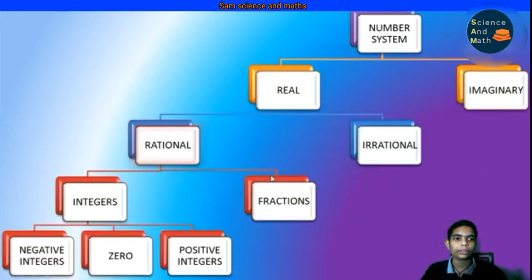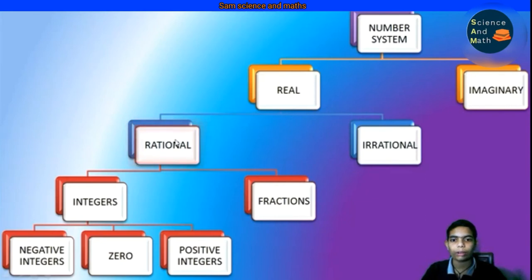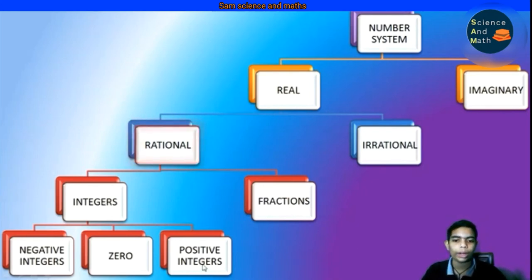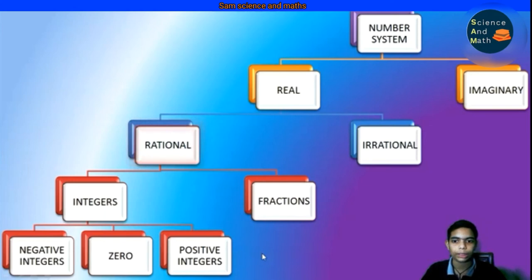Here you can see the flowchart of the number system. In the number system we have two parts: real numbers and imaginary numbers. In real numbers we have rational and irrational numbers. In rational numbers we have integers and fractions. In integers we have negative integers, 0, and positive integers.